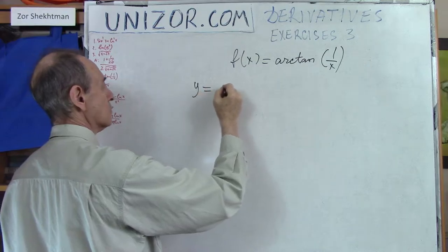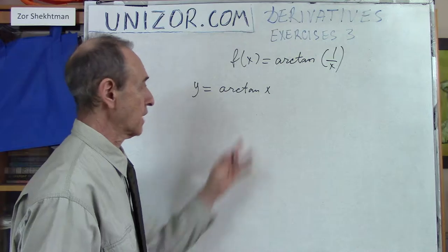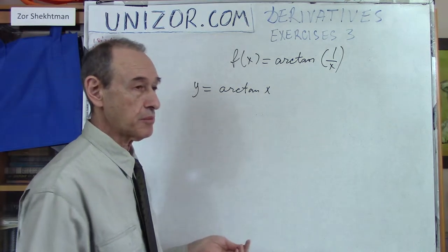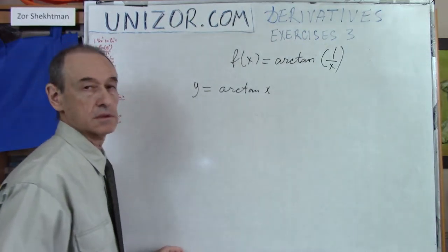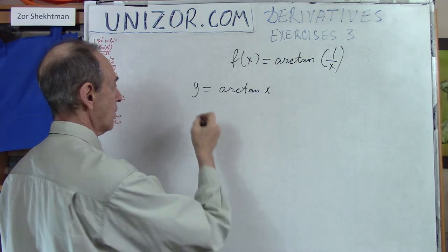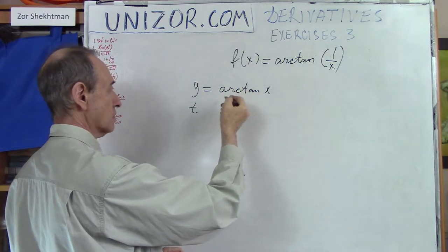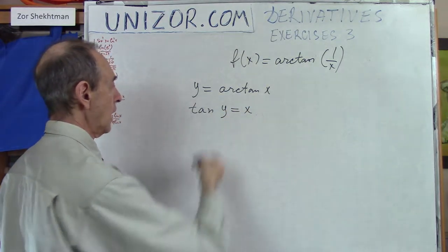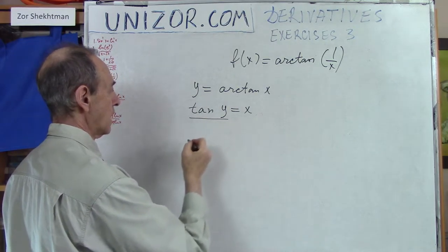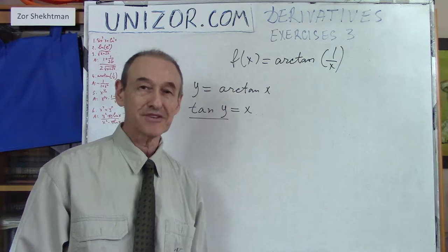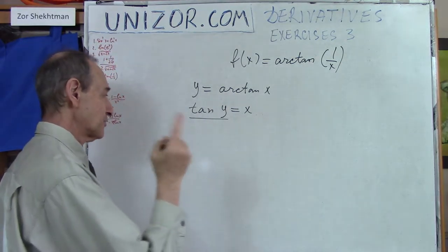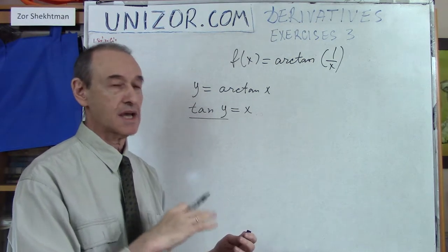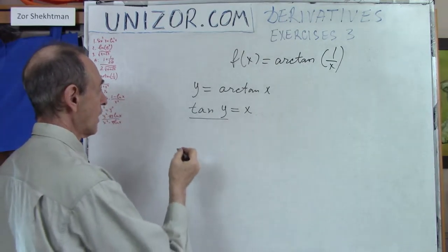Let's find the derivative of y = arctan(x). This is an implicit definition — arctan(x) is the angle whose tangent equals x. So if tan(y) = x, I can differentiate both sides. But I also don't remember the derivative of tangent, so I need to derive that too. I only reliably remember that the derivative of sine is cosine, and the derivative of cosine is minus sine.